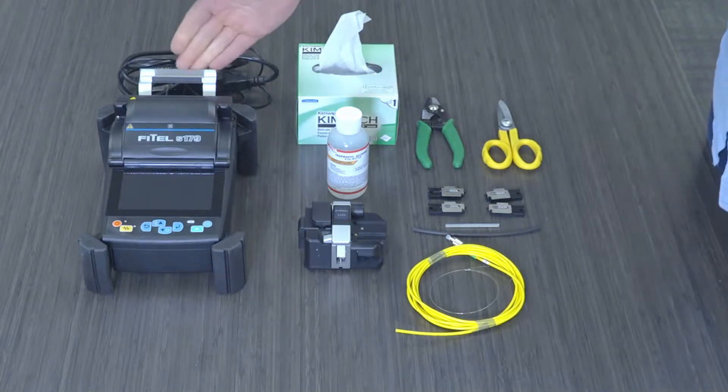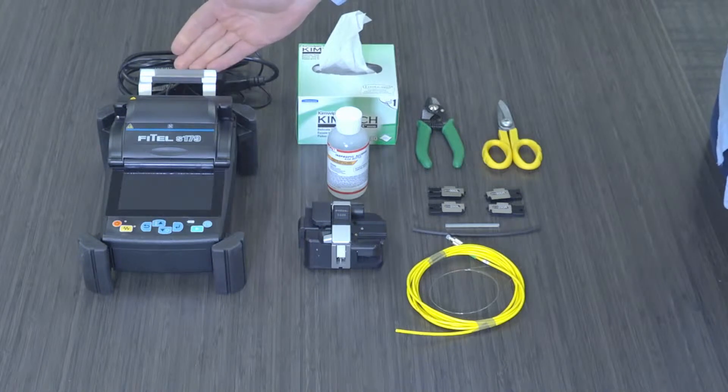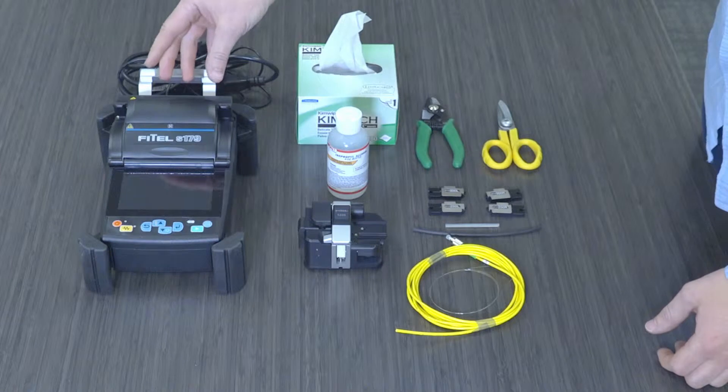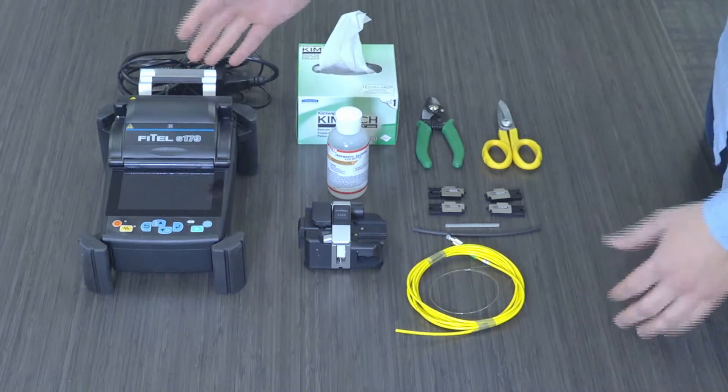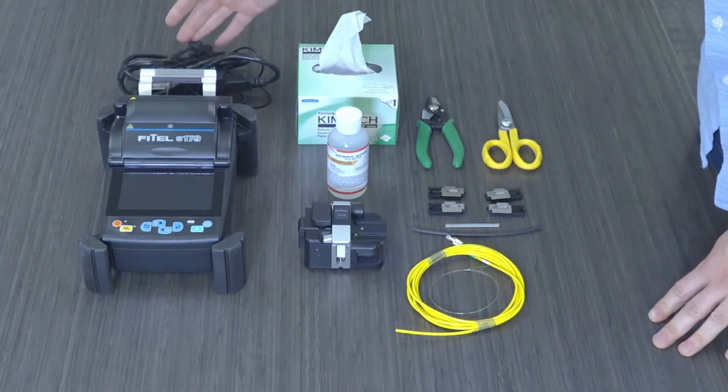Starting over here we have a single mode fusion splicer. This is the device which will actually take the two fibers, bring them together, align them, and then fuse them together. We have the necessary power for this device.